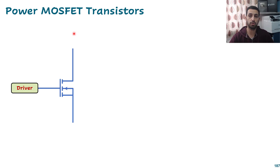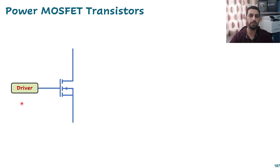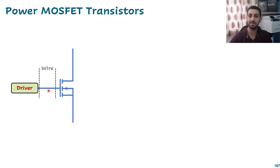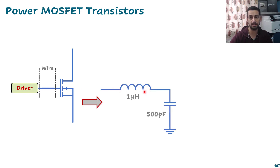In this lecture we are going to talk about some considerations for using MOSFETs in circuits. The first one is a circuit where we have a MOSFET and a driver, but some manufacturers have problems if your driver is far away from your MOSFET, because the wire has some inductance. This inductance, combined with the MOSFET's input capacitance, forms a small LC circuit model.